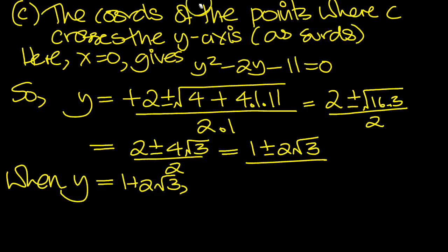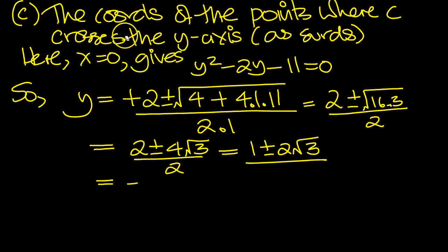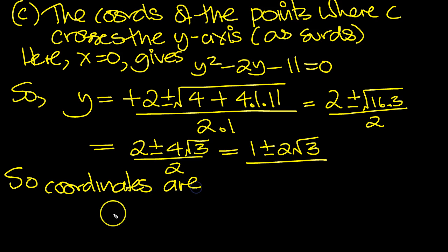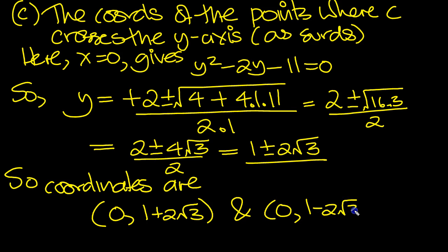So we just simply need to put 0s. So let's just go back and write down the coordinates. So coordinates are then, the x value is 0, we'll get the y value. One of them is 1 plus 2 root 3, and the other value will be 0 again, and 1 minus 2 root 3.